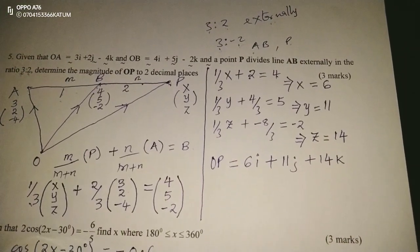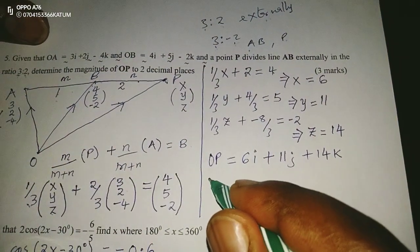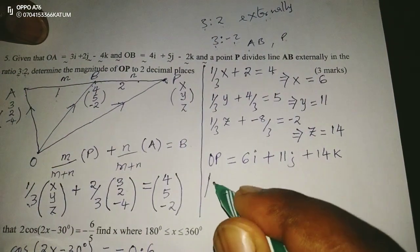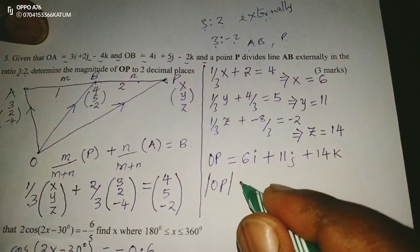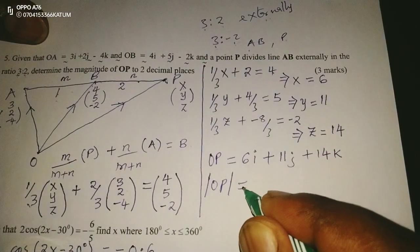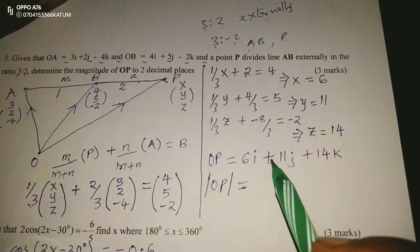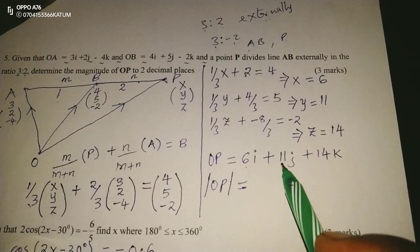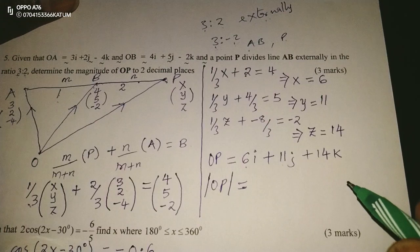That means now, vector OP, we can obtain its magnitude. For us to get magnitude, remember mathematically, the magnitude is expressed this way. It can also be called the modulus, or the length of vector OP. It's going to be, when we take X squared, plus Y squared, plus Z squared, then we obtain the square root.